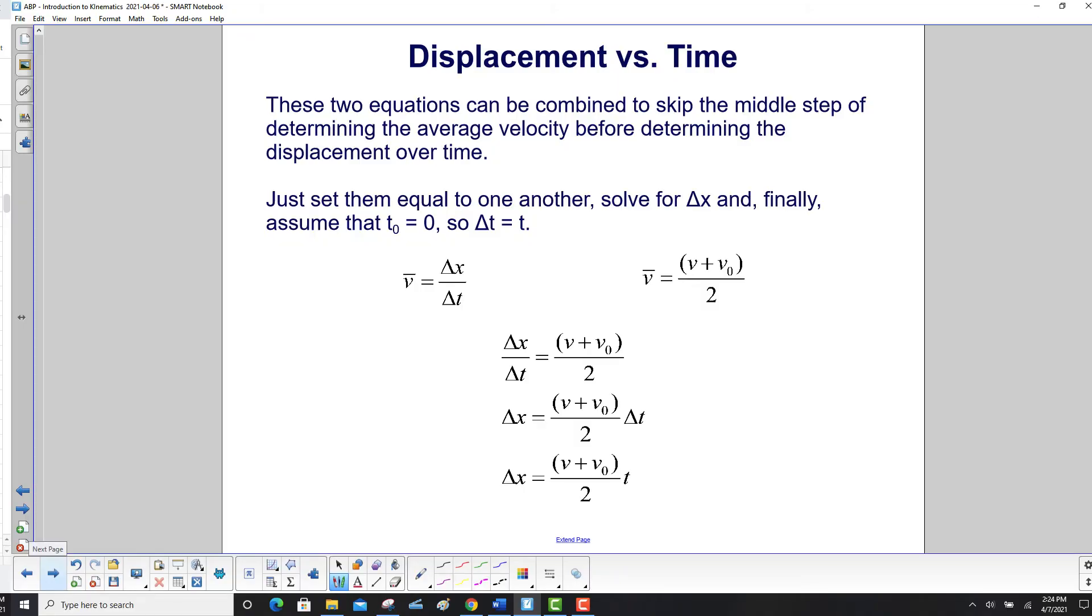One more step. These two equations can be combined to skip the middle step of determining the average velocity before determining the displacement over time. Just set them equal to each other, right? They both equal the average velocity. Solve for Δx. And finally, assume that t₀ is equal to zero.